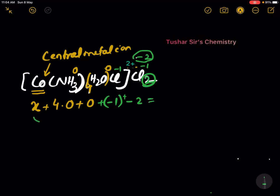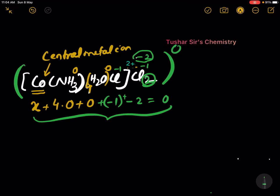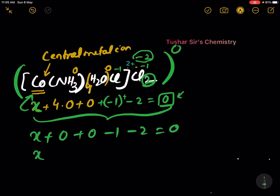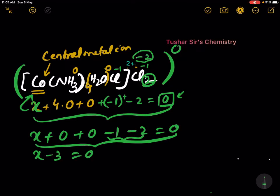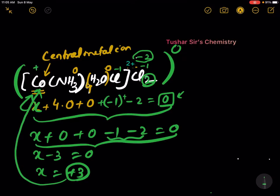The total charge on the complex compound is 0. As it is a neutral compound, the total charge will be 0. We have to find the value of X, that is the oxidation number of the central metal ion. X plus 0 plus 0 minus 1 minus 2 equals 0, so X minus 3 equals 0, giving X equal to plus 3. The oxidation number of cobalt is plus 3.